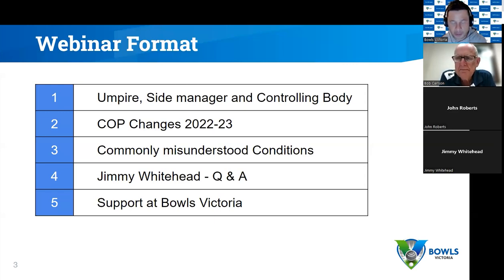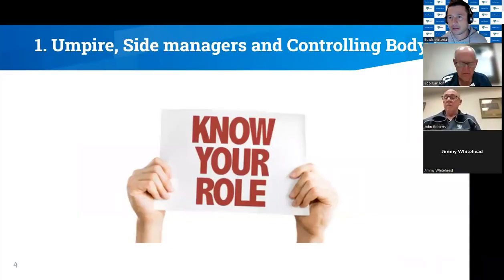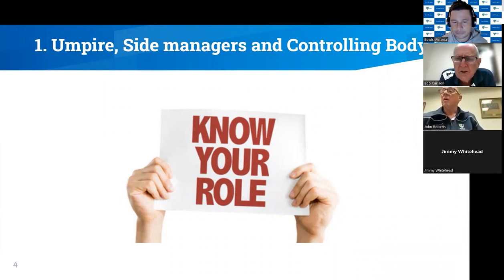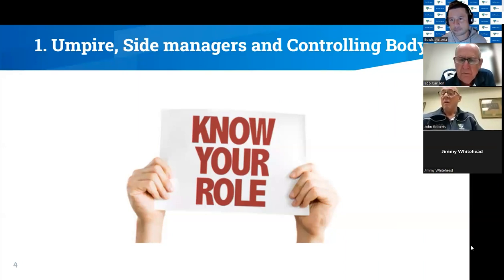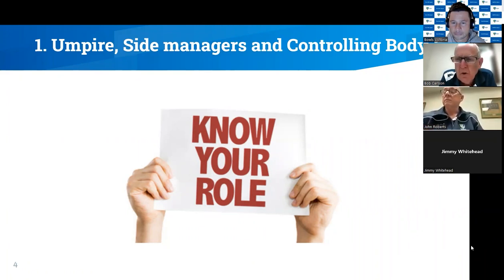Bob, do you want to start with the difference between umpire, side manager, and controlling body? It is recommended that the side manager and the umpire not be the same person. If side managers are unable to reach agreement, they need to defer to the umpire to make the decision. It's unreasonable to have a person act as side manager and then change hats and become the umpire. In smaller clubs it may be difficult to separate roles, but ideally they should not be one and the same person.